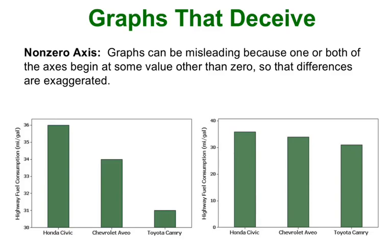Let's look at graphs that deceive. Looking at two graphs: in which one did Honda seem to outperform its competitors? Actually, this is the same data set — the same graph. One starts at zero and the other starts at 30. If we chop the first graph and zoom in on the top portion, that's what the second graph shows. So if we truncate something or don't label the axis properly, we can get very different conclusions — on the first graph it looks like Honda outperformed by a lot, but in reality it was fairly close.